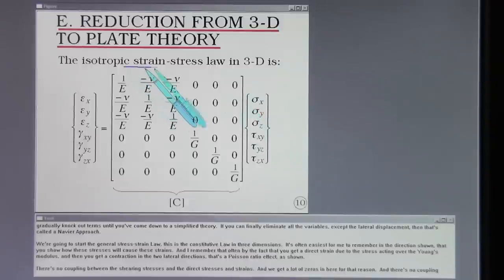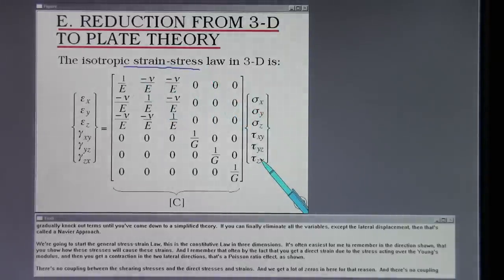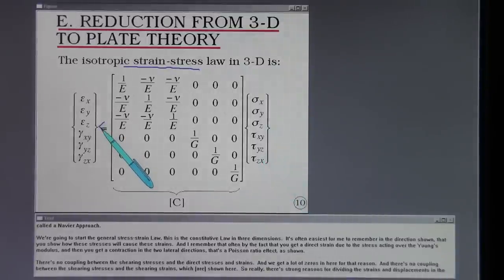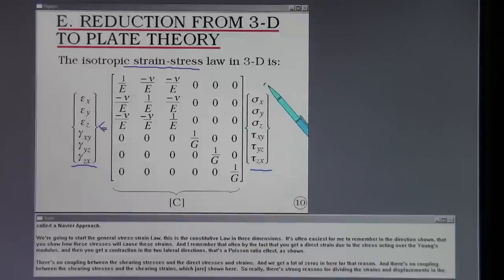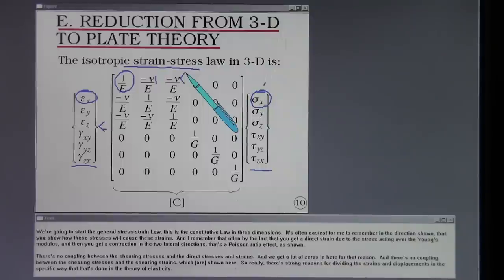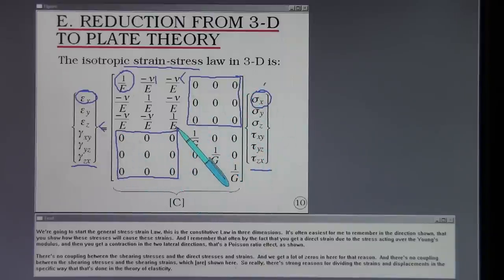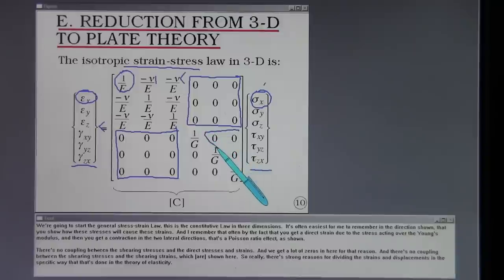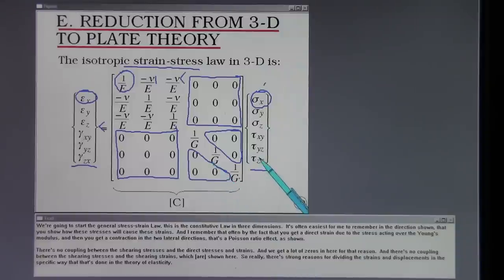We're going to start with the general stress-strain law. This is the constitutive law in three dimensions. It's often easiest for me to remember in the direction shown that you show how these stresses will cause these strains. And I remember that often by the fact that you get a direct strain due to the stress acting over the Young's modulus, and then you get a contraction in the two lateral directions that's a Poisson ratio effect as shown. There's no coupling between the shearing stresses and the direct stresses and strains. And we get a lot of zeros in here for that reason. And there's no coupling between the shearing stresses and the shearing strains, which is shown here. So really there's strong reasons for dividing the strains and displacements in the specific way that that's done in the theory of elasticity.